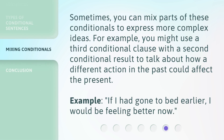Sometimes you can mix parts of these conditionals to express more complex ideas. For example, you might use a Third Conditional clause with a Second Conditional result to talk about how a different action in the past could affect the present. Example: If I had gone to bed earlier, I would be feeling better now.